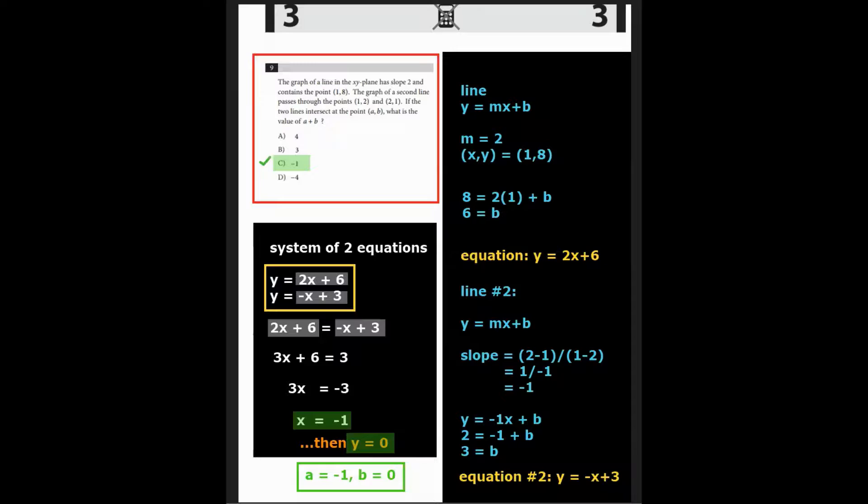Well, here we have a line, the first line, y equals mx plus b with a slope of two. And xy goes through the floating point one comma eight. So eight equals two times one plus b, and b equals six, giving us the equation in slope intercept form, y equals two x plus six.